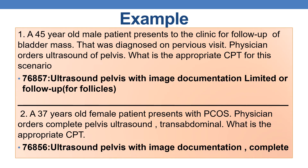Let us discuss an example. A 45-year-old male patient presents to the clinic for follow-up of a bladder mass that was diagnosed on a previous visit. The physician orders an ultrasound of the pelvis. Since the patient is coming for re-evaluation of the bladder mass previously diagnosed, for re-evaluation or follow-up you need to assign 76857 — ultrasound pelvic with image documentation, limited or follow-up.